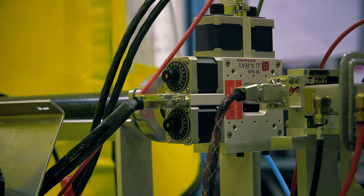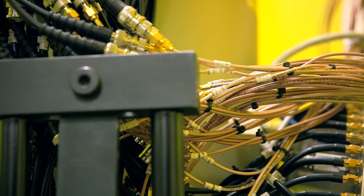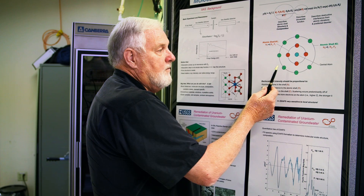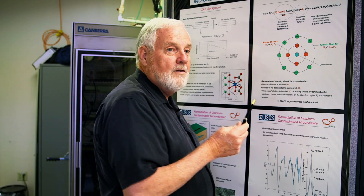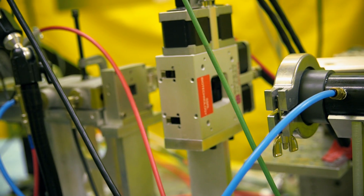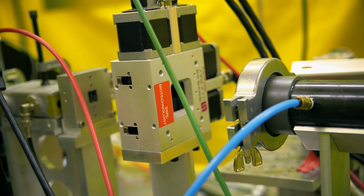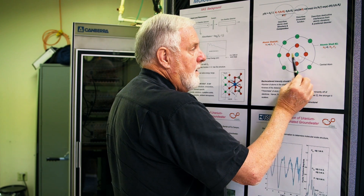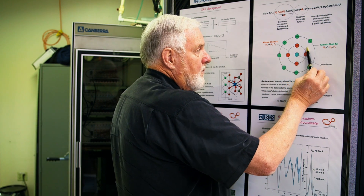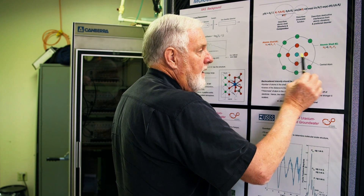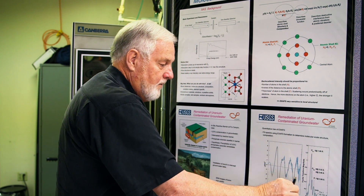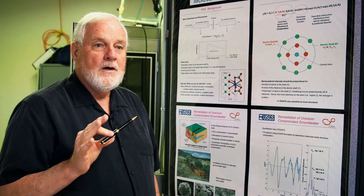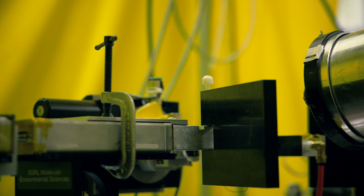We want to hit a sample with a certain type of atom in it — uranium, lead, whatever it might be — such that we excite the core electrons of the atoms of interest in the sample. Once we do that, these photoelectron waves emanate out from the central atom and are backscattered by the surrounding atoms, producing this pattern of interest that we can analyze and extract structural information from at the atomic level.